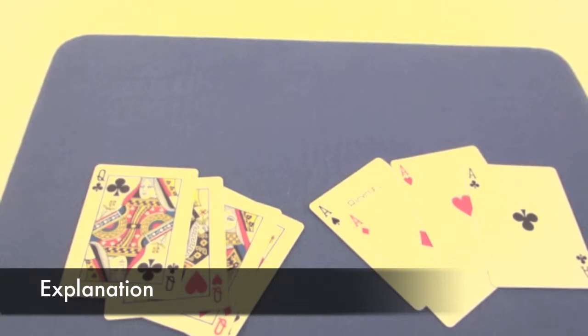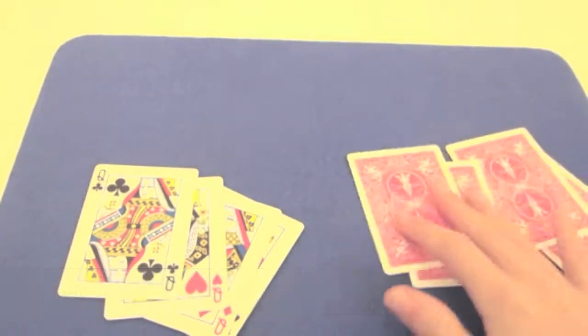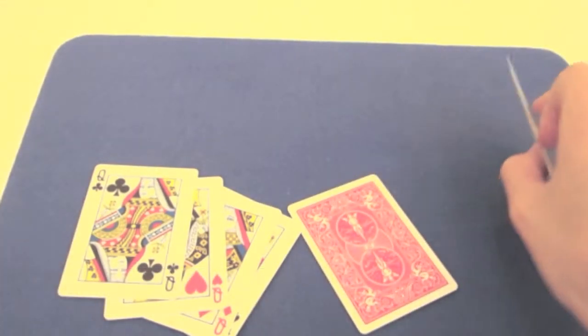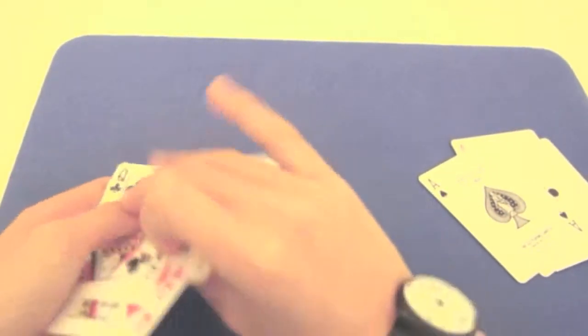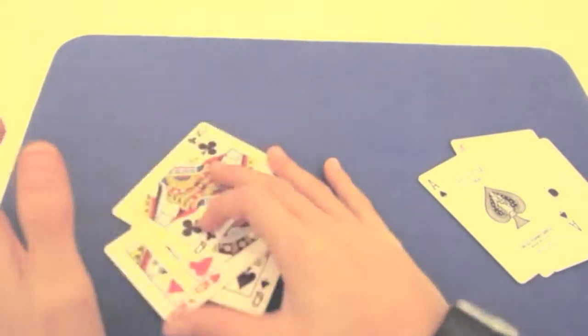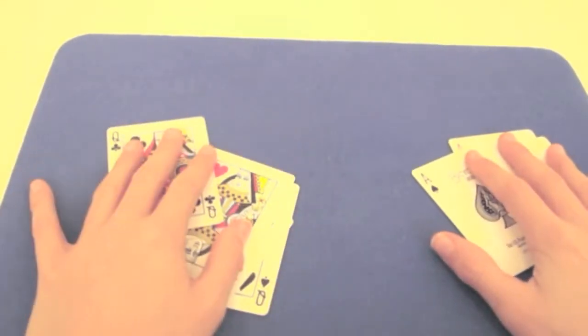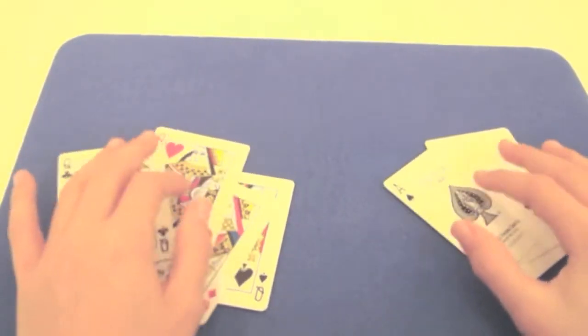How does it work? It's very simple. All you need is 4 normal aces from random pack of cards and 4 queens from the same pack of cards. They're all normal. There's nothing weird. Let's get started.